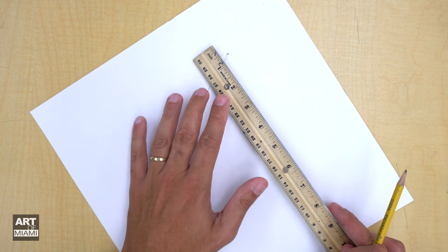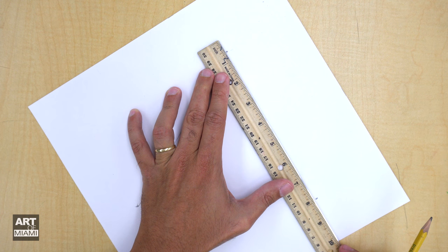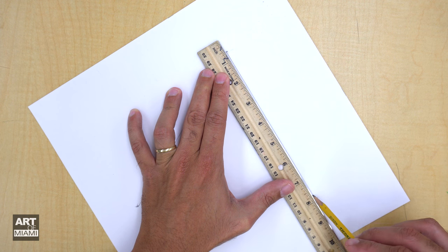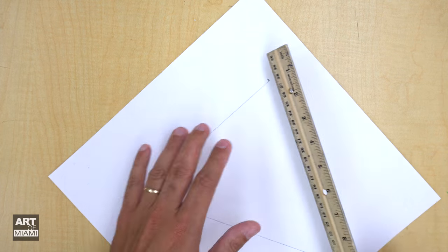A lot of people actually do the opposite. They hold the ruler soft, but press very hard. And what happens? The ruler moves. All right, let's finish this up.